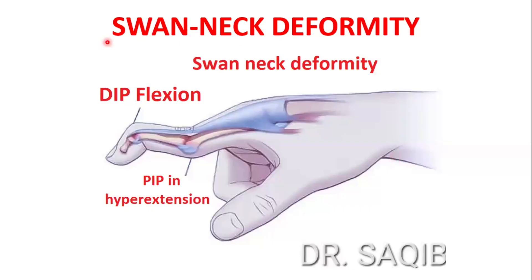Hi, I am Dr. Sakeh Mansour and today I will discuss with you the swan neck deformity. The distal interphalangeal joint is in flexion and the proximal interphalangeal joint is in hyperextension.